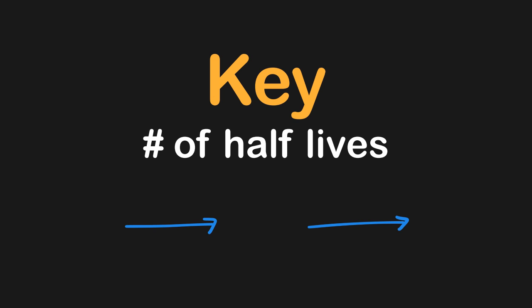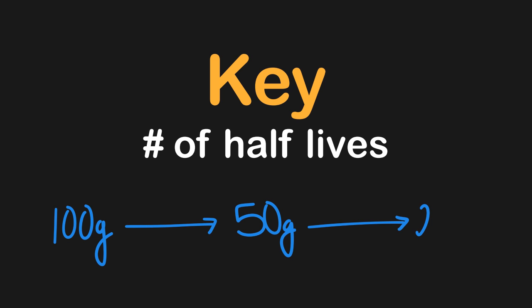For example, if we started with 100 grams of a sample and that 100 gram sample underwent two half-lives, then at each of the arrows we would go ahead and cut this number in two. So after one half-life we'd have 50 grams, and after the second half-life we'd only have 25 grams remaining.